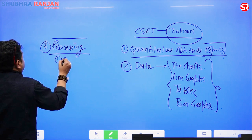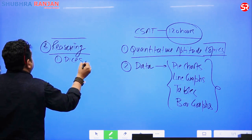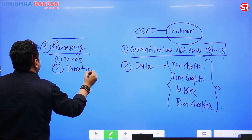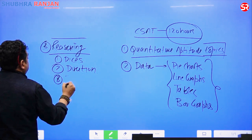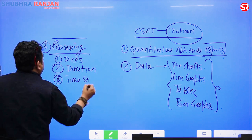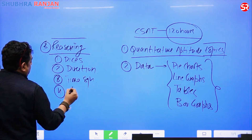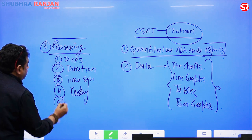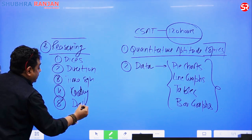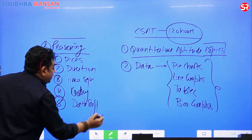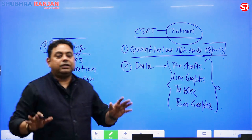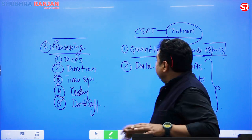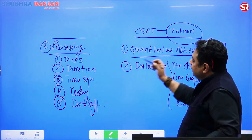Topics like dices — yes, it has come in UPSC. Directions — yes, every year directions come. Time sequence — yes, it comes. Coding — yes, we are going to do coding. And there is a topic called data sufficiency where UPSC is actually experimenting but nobody covers it. We are going to cover that too. So everything in quantitative aptitude and reasoning is covered.